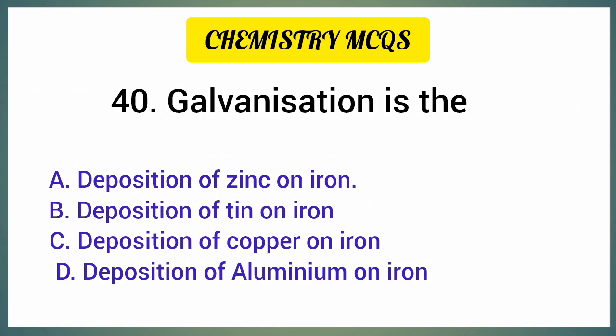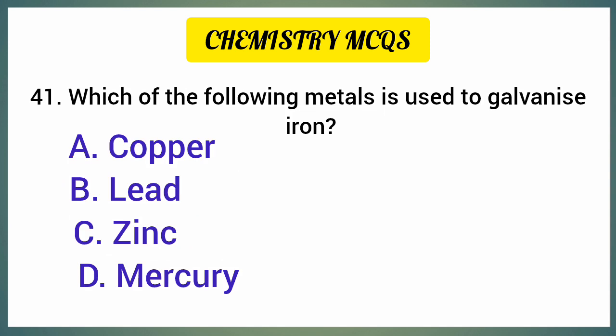Galvanization is the — correct option is option A: Deposition of zinc on iron. Which of the following metals is used to galvanize iron? Correct option is option C: Zinc.